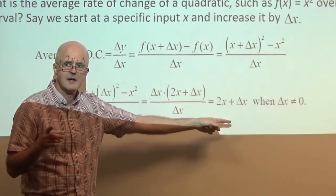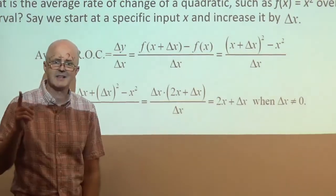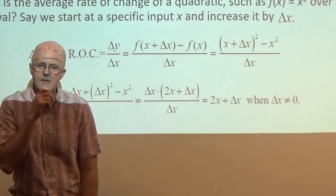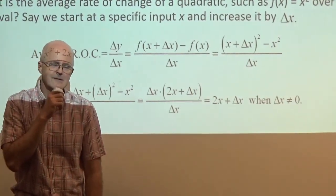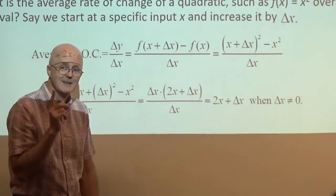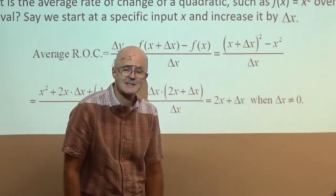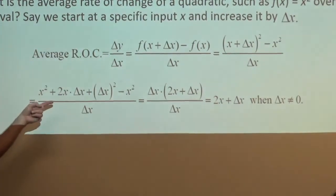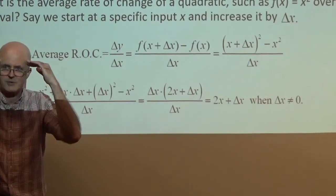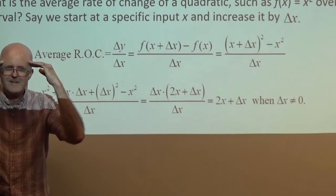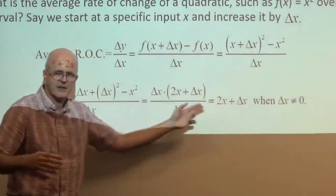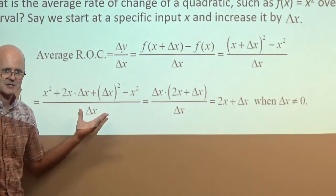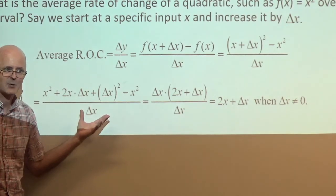Here's the calculus: take this expression and let Δx approach zero — take the limit of 2x + Δx as Δx goes to zero. Replace Δx with zero and the answer is 2x. But wait — I thought Δx can't be zero, because I divided by Δx. Why am I letting Δx go to zero if Δx can't equal zero over here? We can dispel this confusion — but we need to take the quiz now.